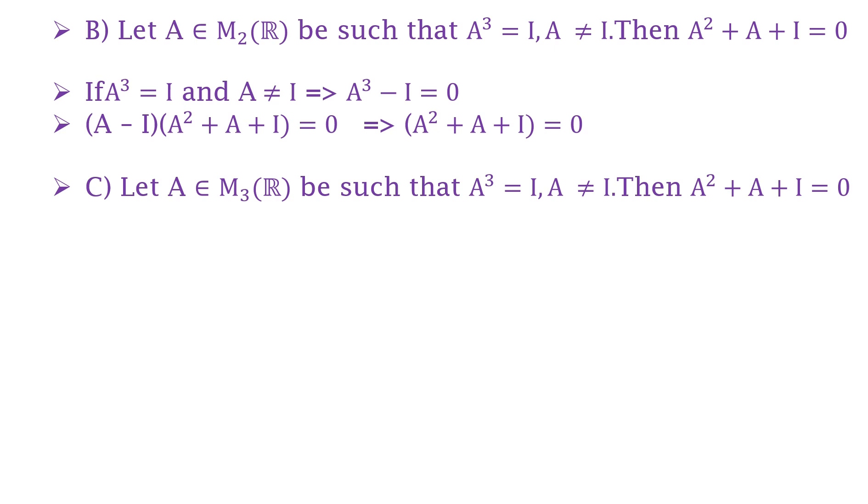Now in option C, it says that A belongs to M₃(ℝ) and the other conditions are same as option B, that is A³ = I, A is not equal to the identity matrix, and A² + A + I = 0.